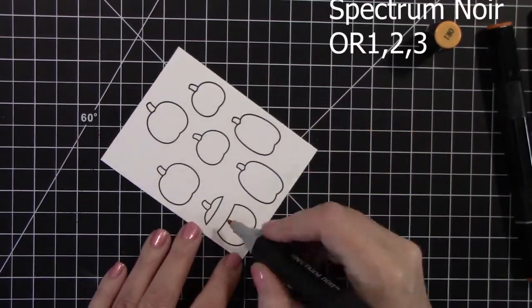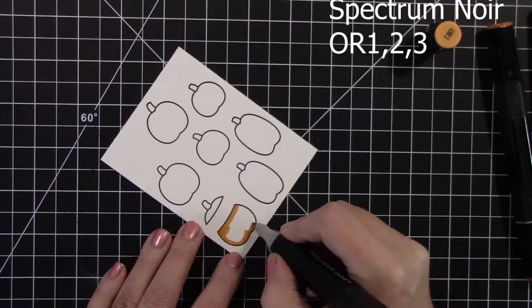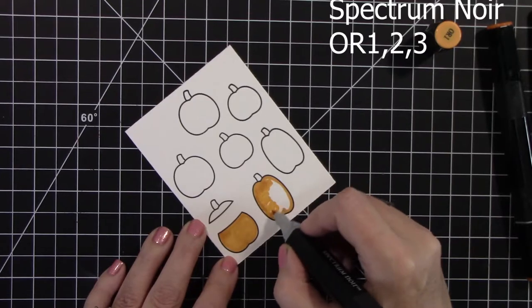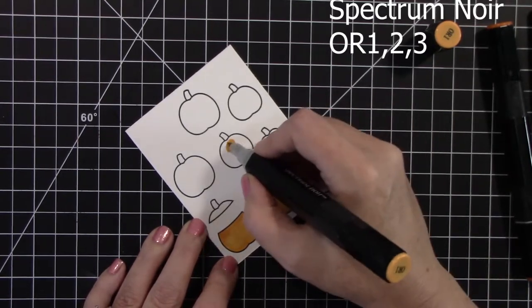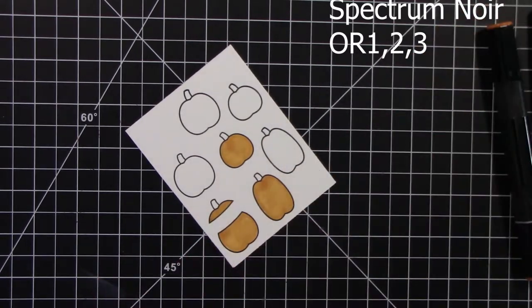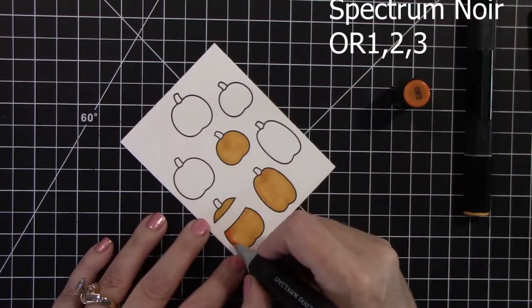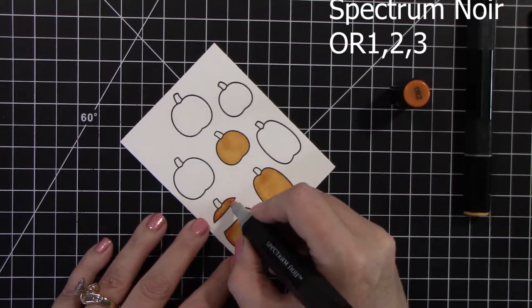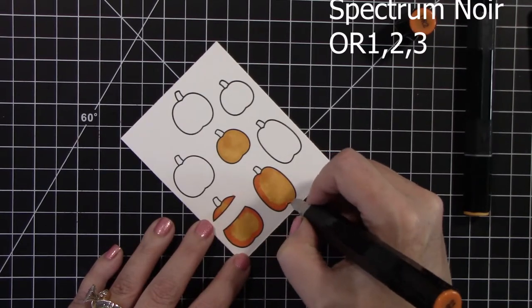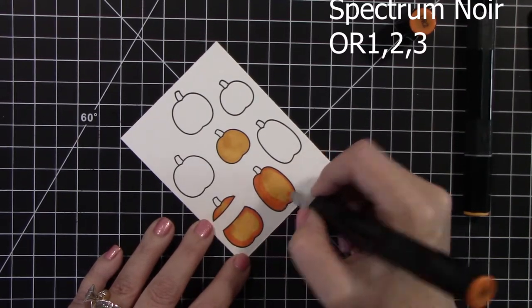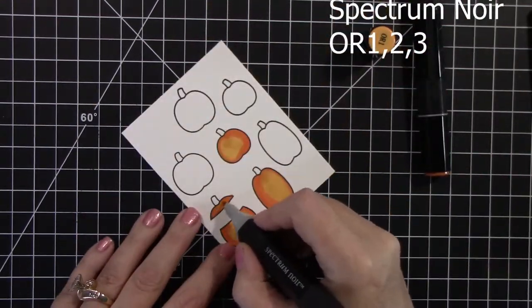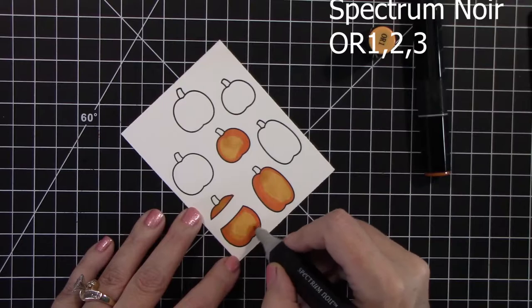So now the colors I used are on the screen. And I'm using Spectrum Noir alcohol ink markers. And I'm using OR1, 2, and 3. But I'm going to get two different colors of pumpkins out of these three colors. So these first pumpkins that I'm coloring, the base color is OR1. And then I'll highlight with OR2. Just getting in some shading. And then go back with that lighter OR1 and kind of blend it out a little bit more.